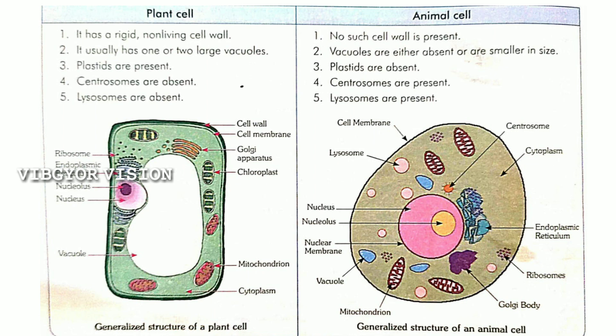Next is centrioles. In plant cell centrioles are absent, but in animal cell centrioles are present. Next, lysosomes: lysosomes are absent in plant cell but present in animal cell.